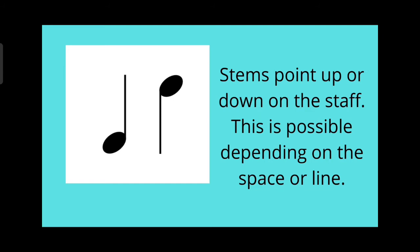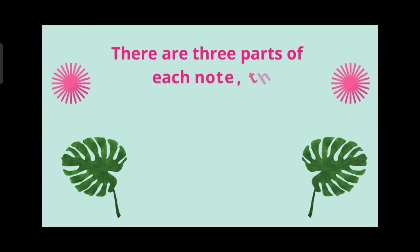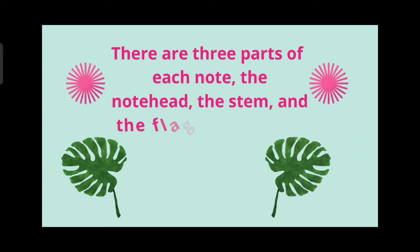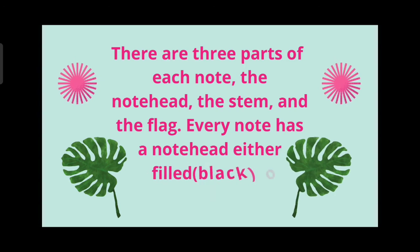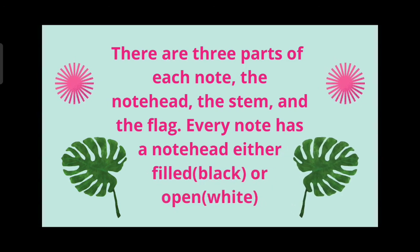There are three parts of each note: the note head, the stem, and the flag or tail. Every note has a note head, either filled when it is shaded we call it black, or open and we call it white or unshaded. They have three complete parts.